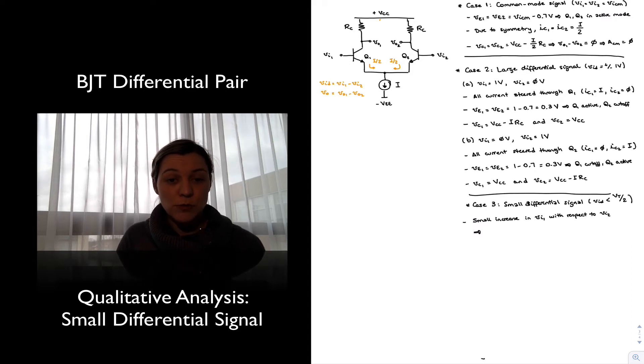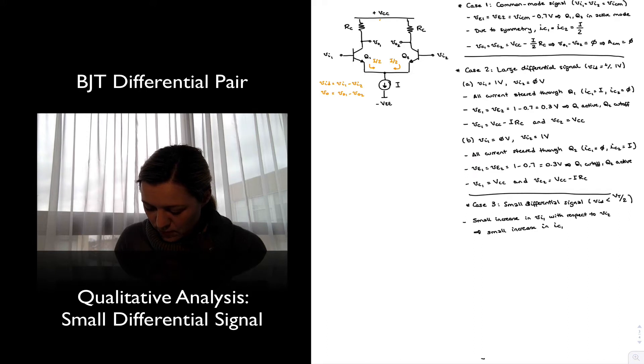I_C is equal to, or approximately equal to, I_S the saturation current times e to the V_BE over V_T. So, a small increase in V_in1 with respect to V_in2 produces a small increase in the collector current I_C1. By how much?